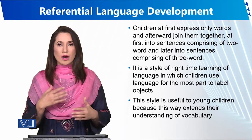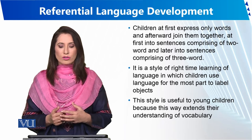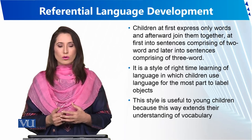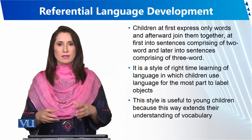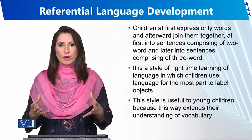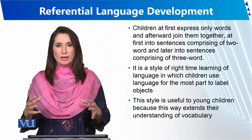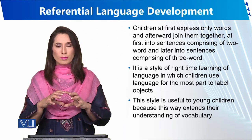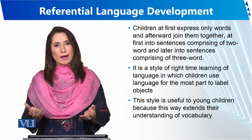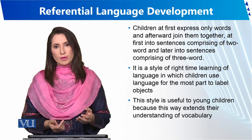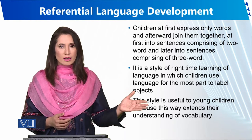This is the start of language learning — a style of early language learning in which children use language mostly to label objects. They are learning: this is a cup, this is a bottle, this is a glass, this is a toy, this is a train. Their vocabulary is increasing. Referential means they know pictures of objects and can identify items just by seeing the pictures.